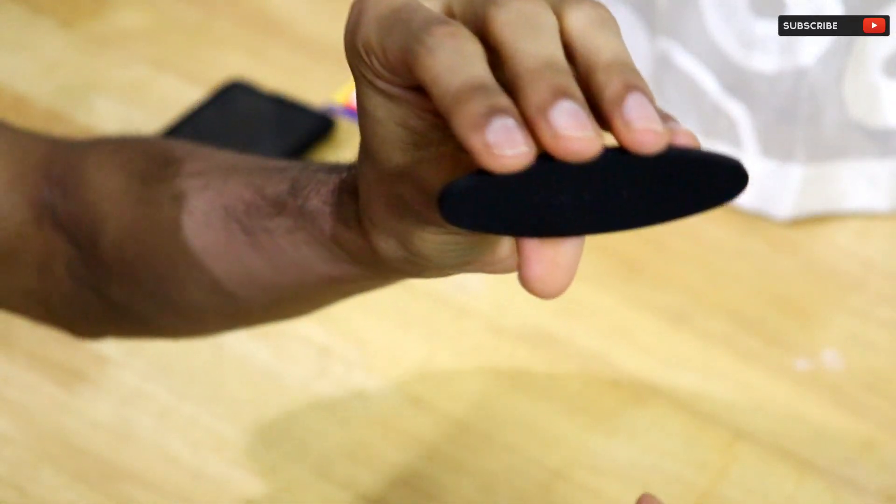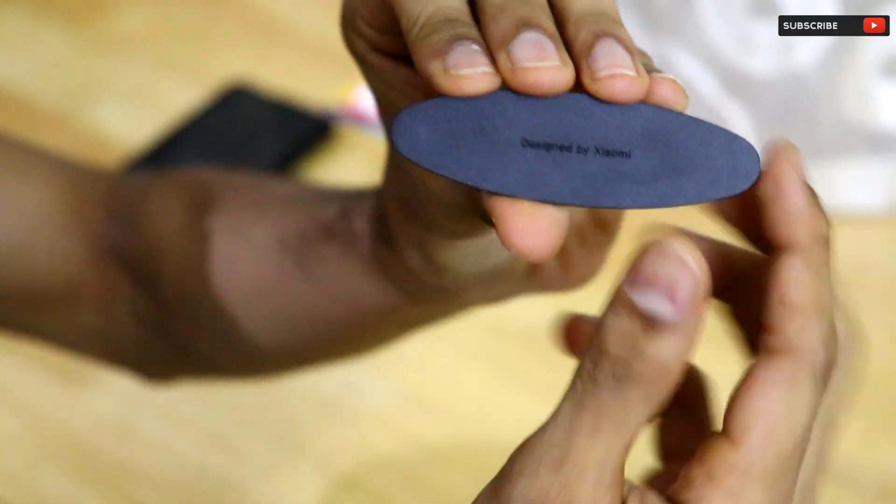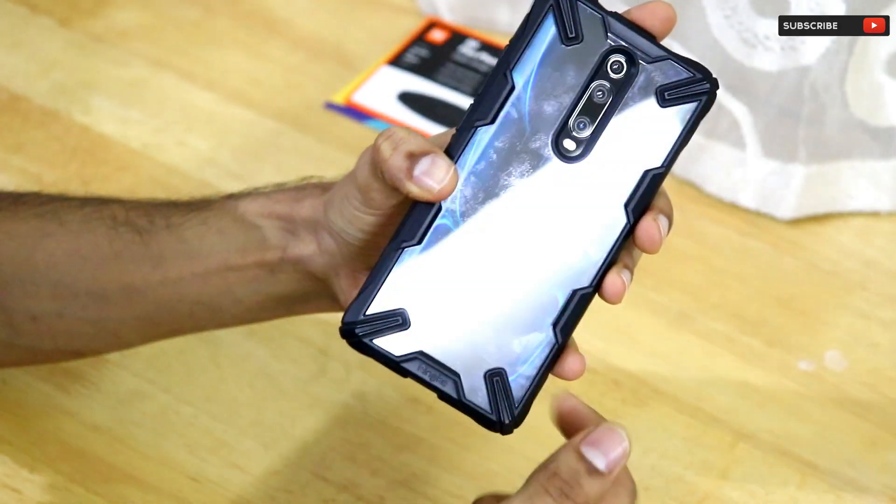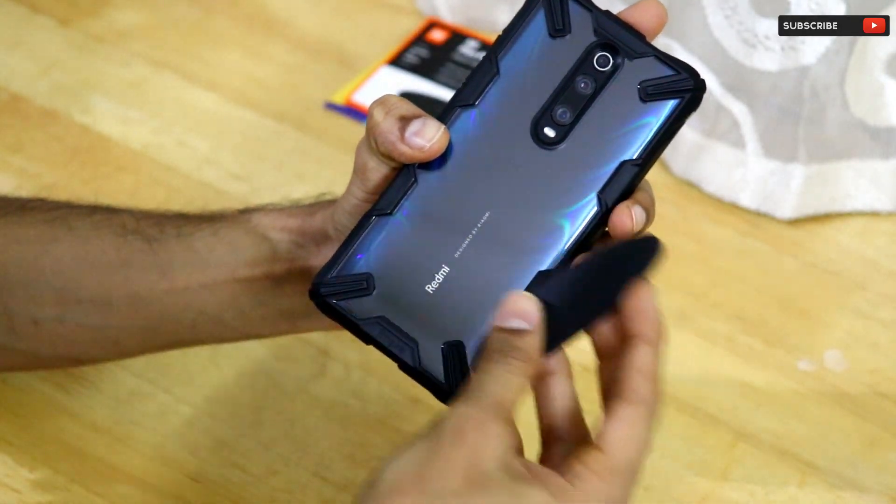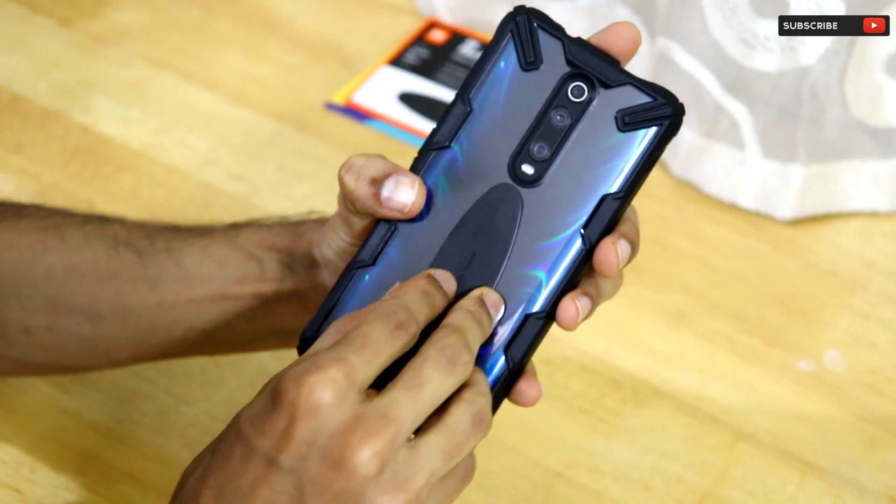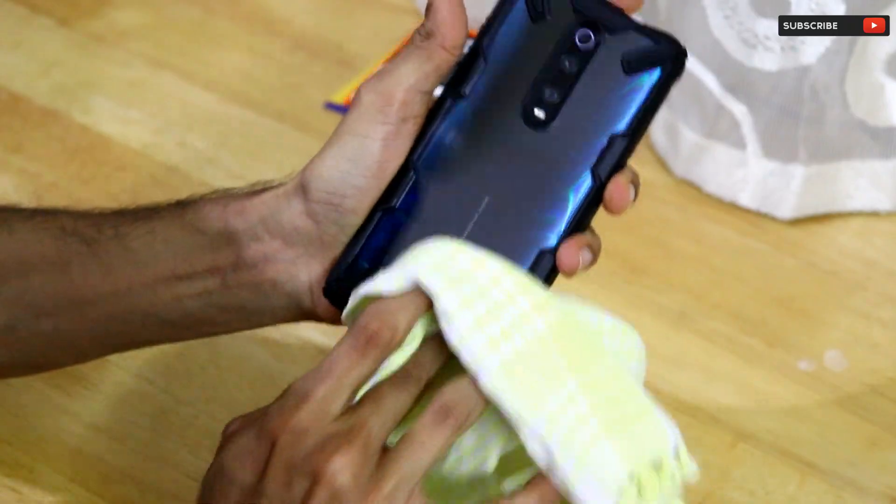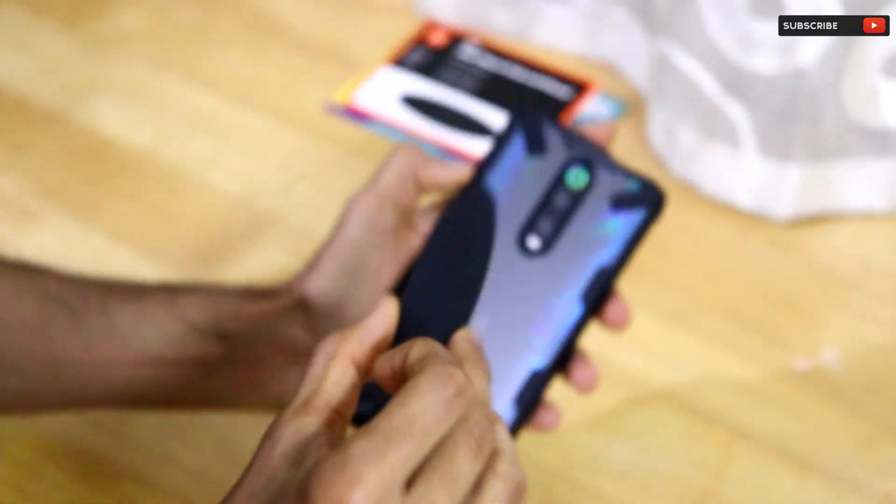The next step in the process is to attach this Mi Flex Grip stand onto the back surface of my smartphone. I own a Redmi K20 Pro - if you're interested in this smartphone, you can check out the reviews I've done on my channel as well. Once the surface of the Redmi K20 Pro's back is clean, we can go ahead and install this Mi Flex Grip.